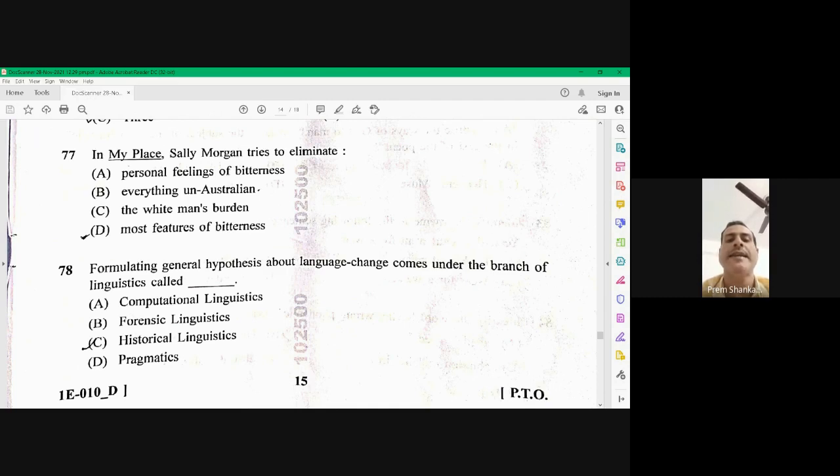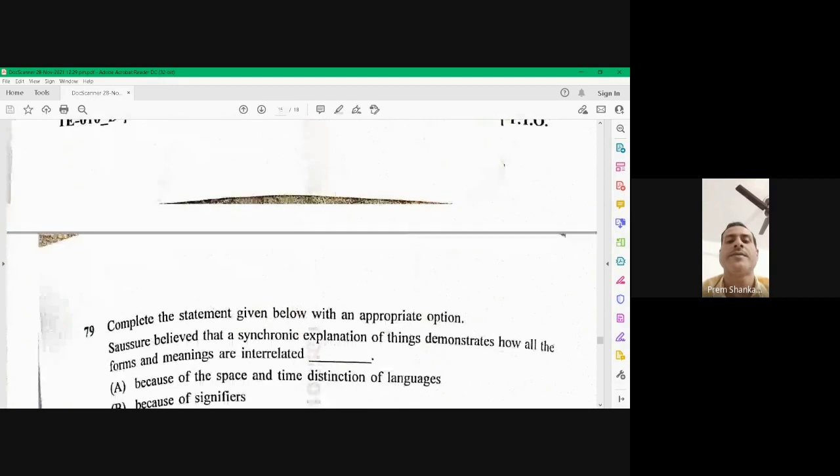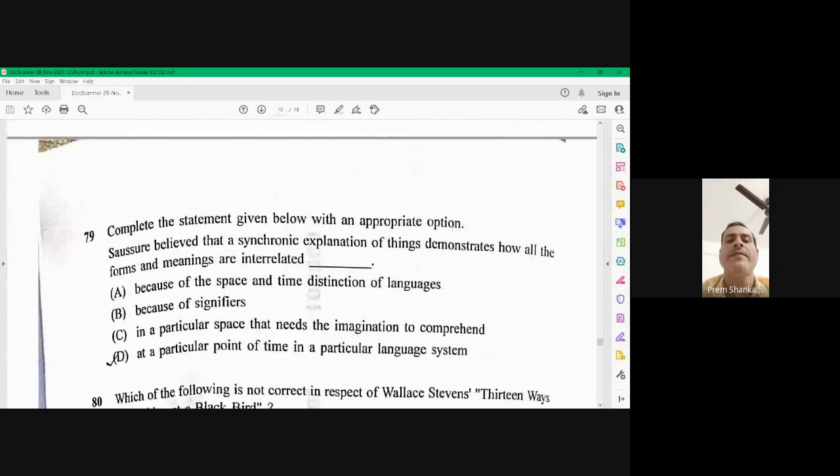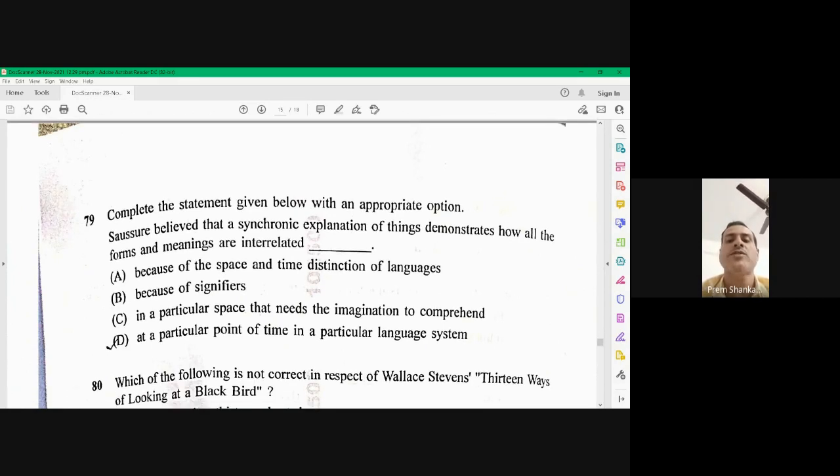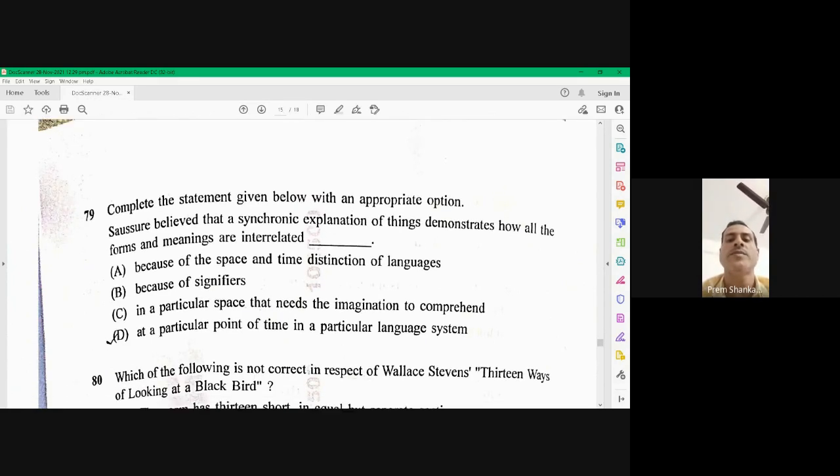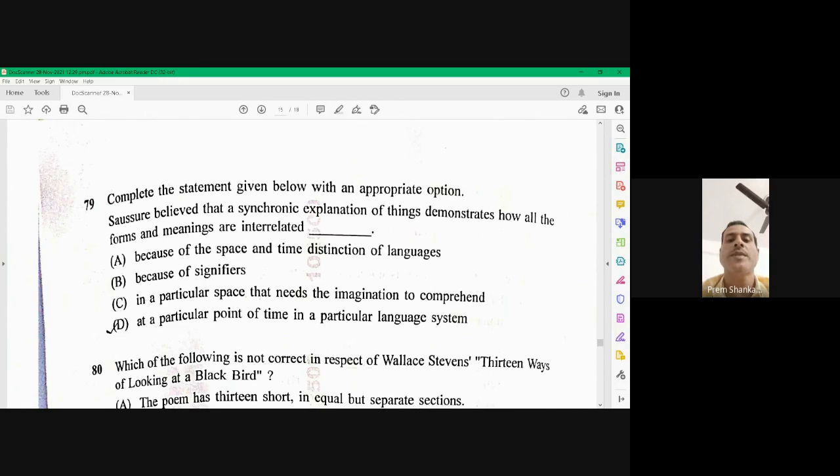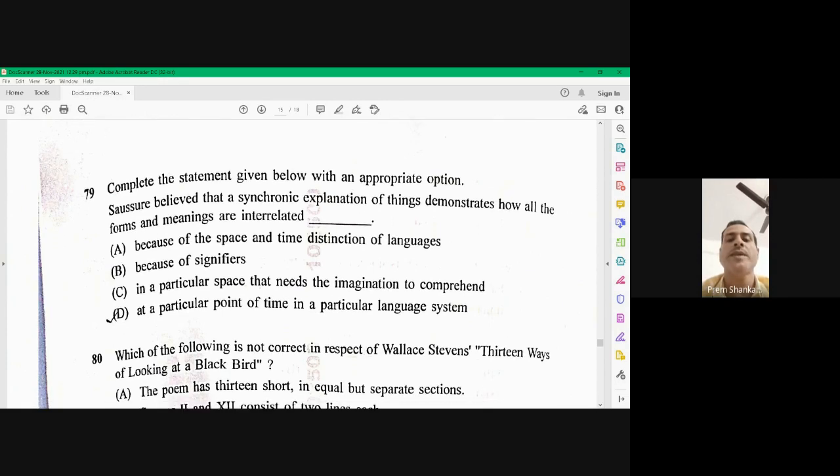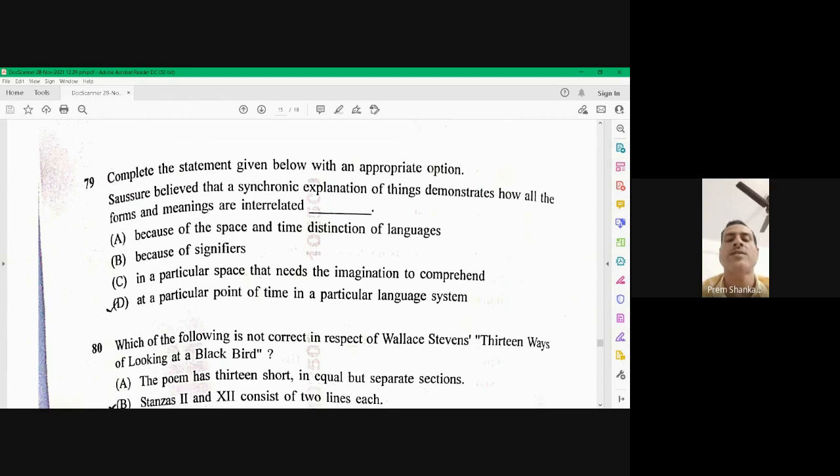Question number 79. Complete the statement given below with an appropriate option. Saucer believed that a synchronic explanation of things demonstrates how all the forms and meanings are interrelated. The right option is D. At a particular point of time, synchronic means at a particular point of time, diachronic means with the historical event, with the time and space. So D is the right option at a particular point of time in a particular language system.